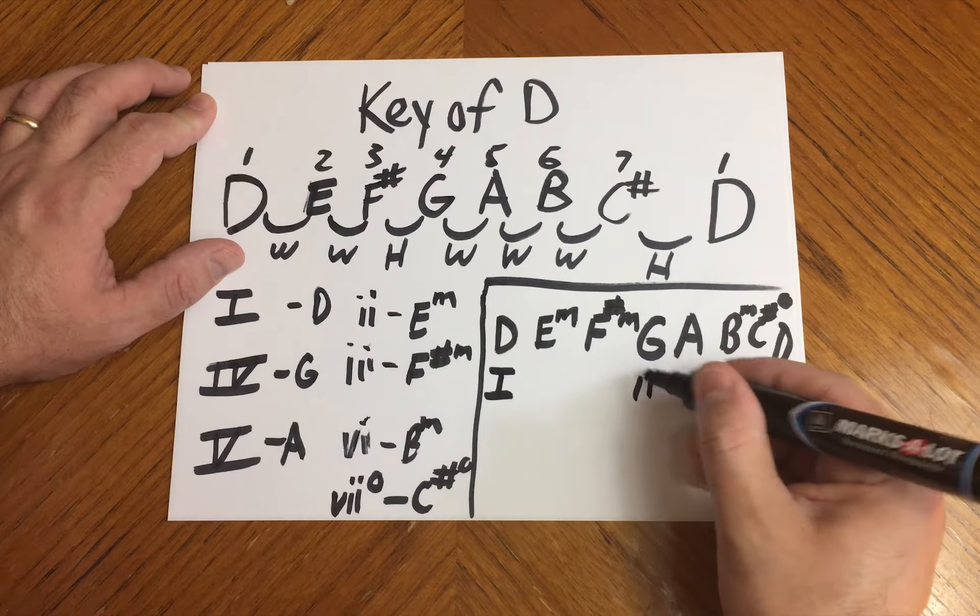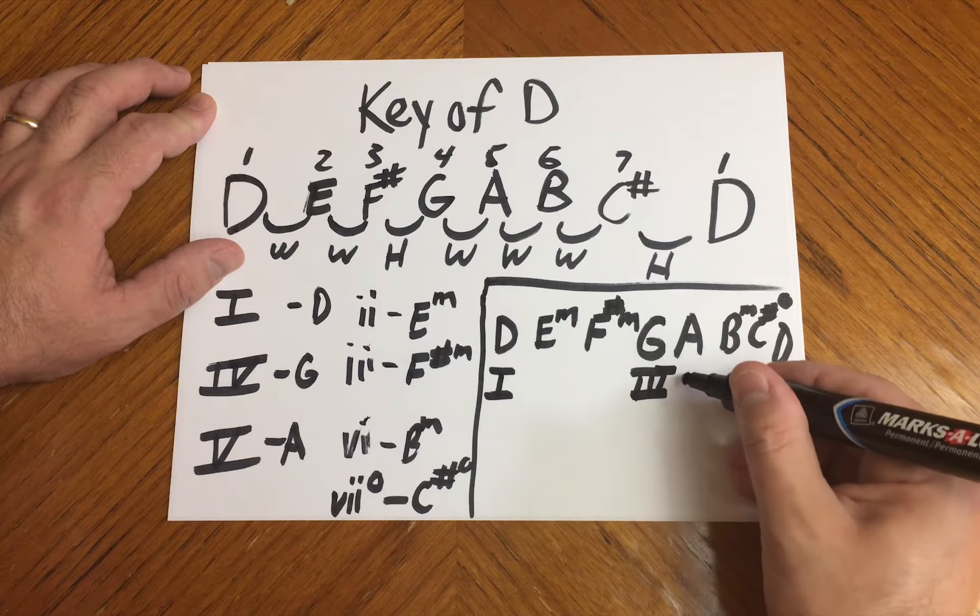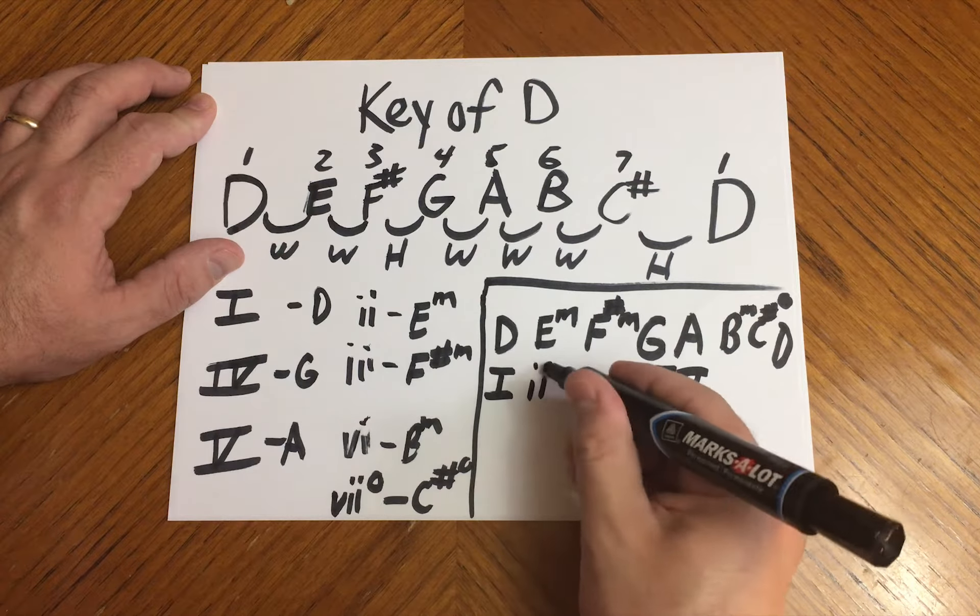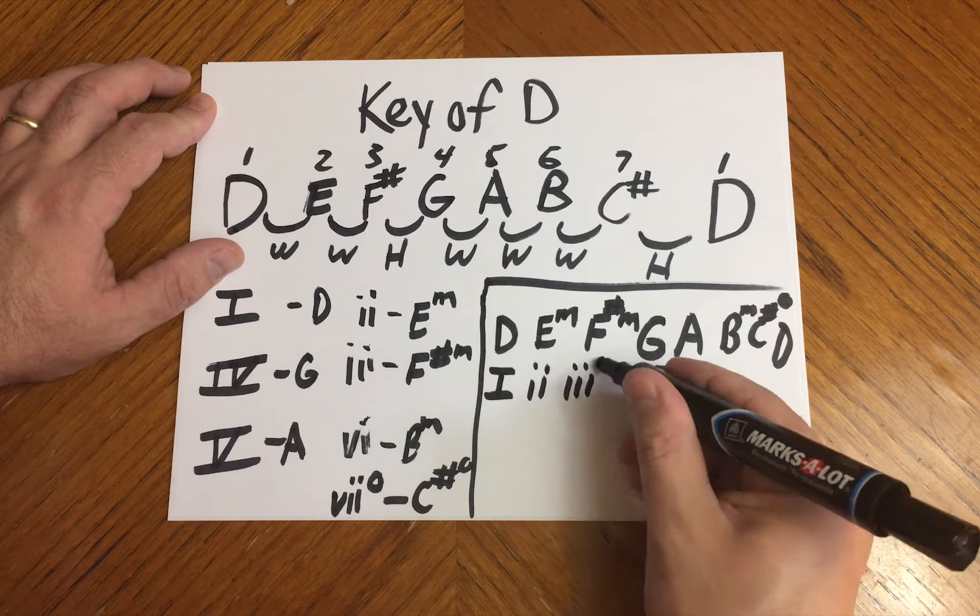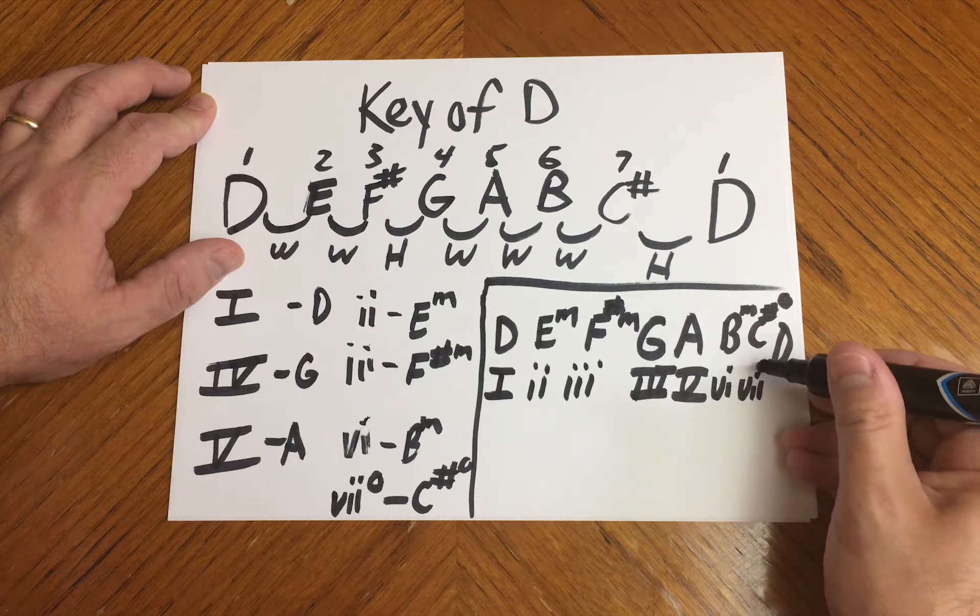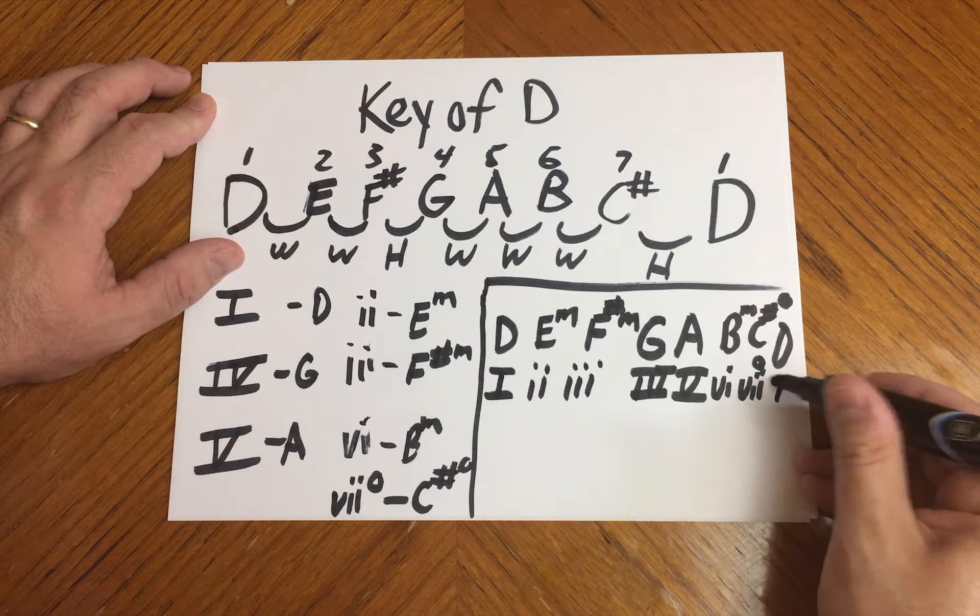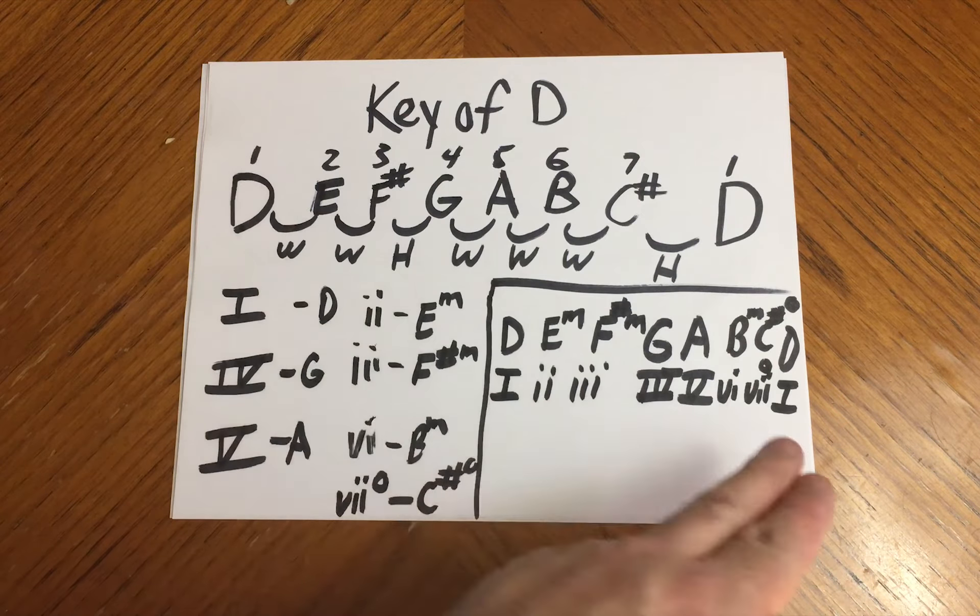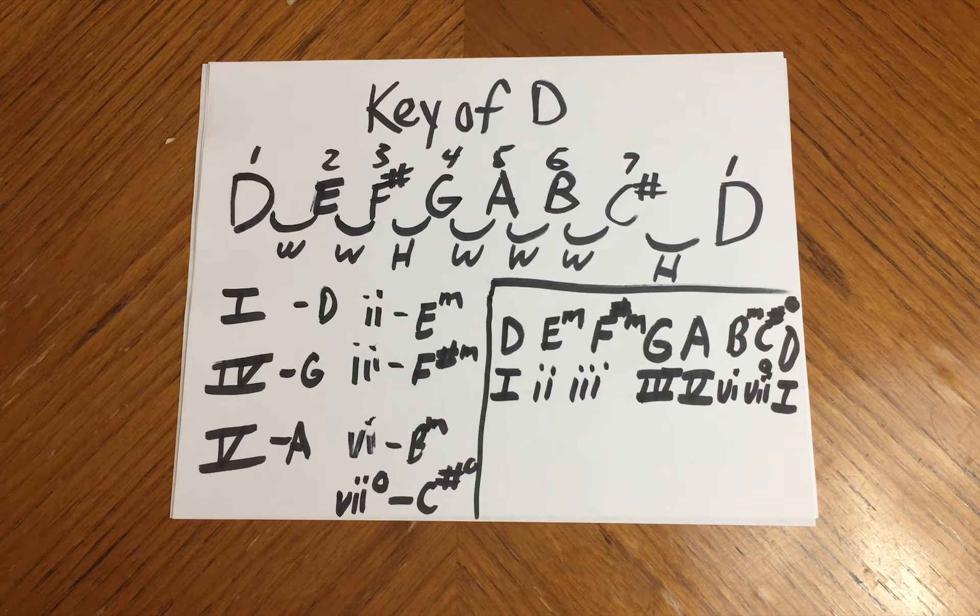1, 4, and 5 are major, 2, 3, and 6 are minor, 7 is diminished, so these are the chords that are in the key of D.